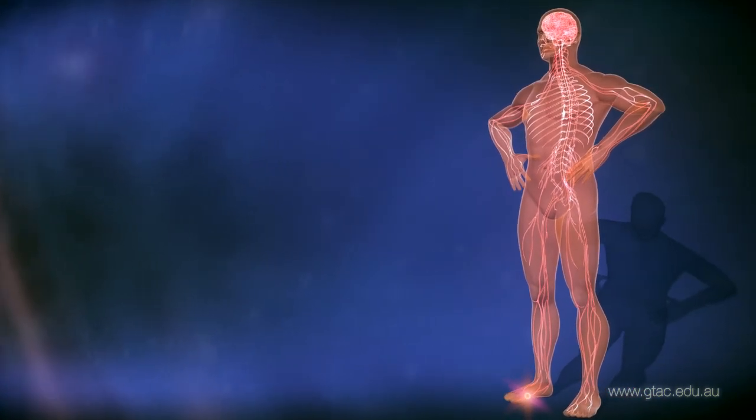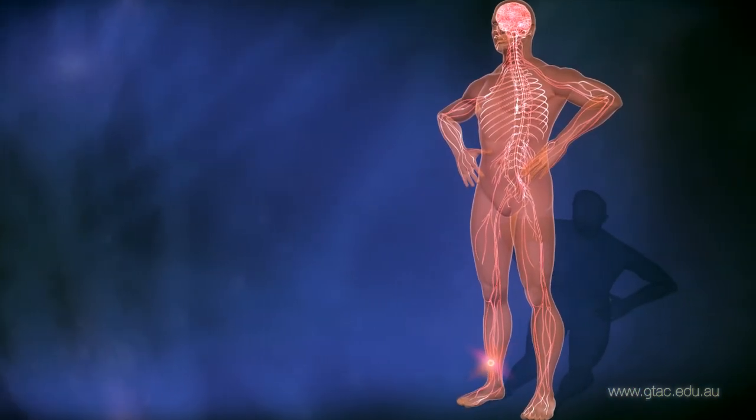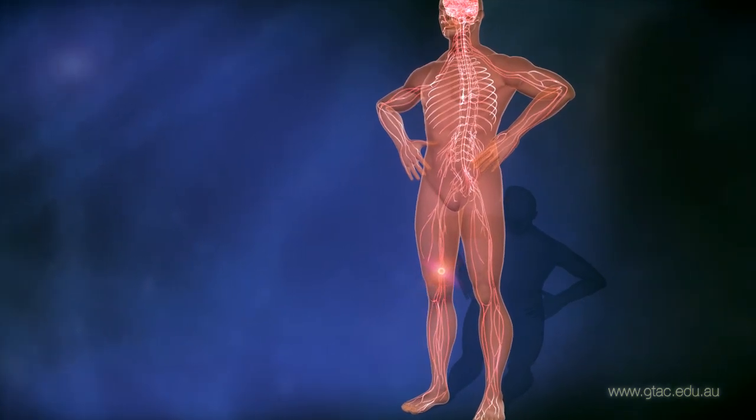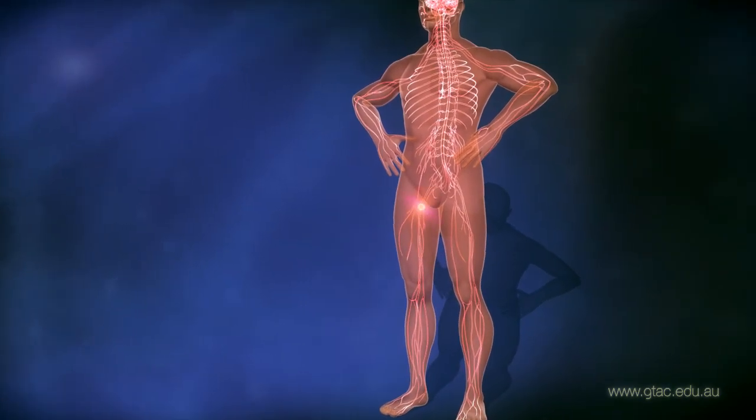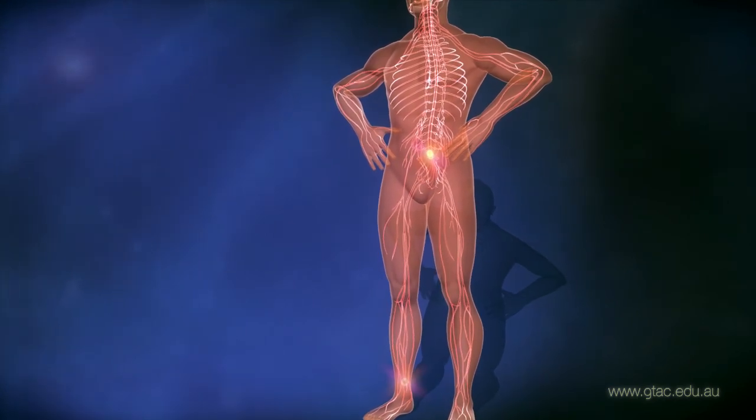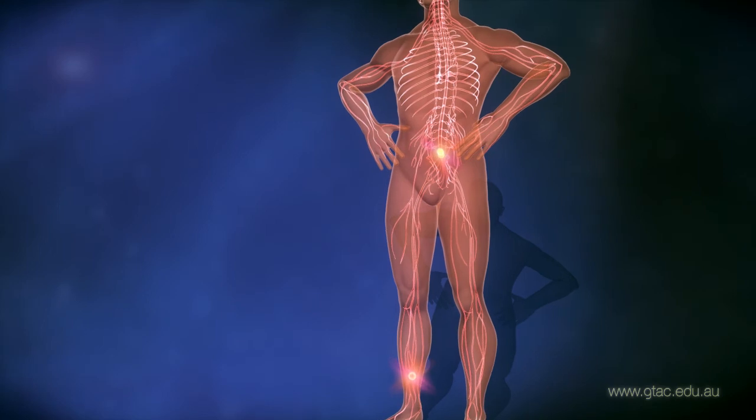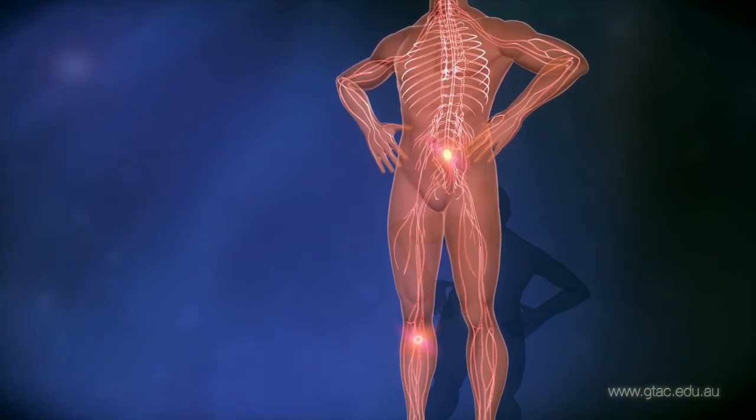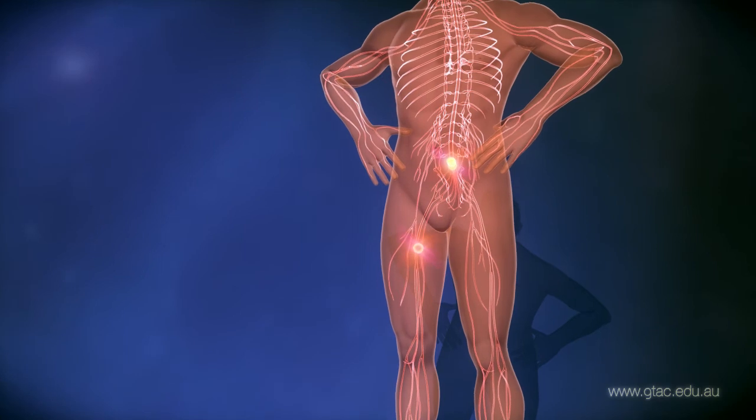After two to fourteen days, the toxin reaches the motor neuron cell body in the spinal cord. Other toxins traveling in the bloodstream also enter motor neurons and make their way to the spinal cord.